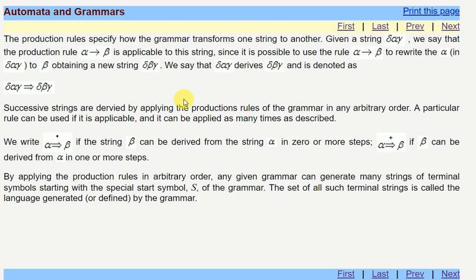What are production rules? Production rules specify how the grammar transforms one string into another. Suppose there is a given string delta alpha gamma. We say that there is a production rule alpha goes to beta is applicable to the string, since it is possible to use the rule alpha goes to beta to rewrite alpha to beta. That means from delta alpha gamma goes to delta beta gamma, it says that delta alpha gamma derives delta beta gamma. Left-hand side always derives right-hand side. But on the left-hand side it should not be empty string.